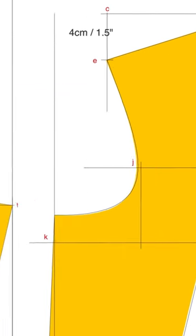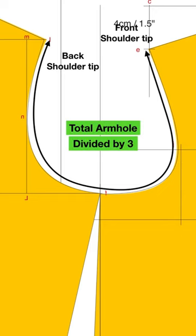The third method is finding it from total armhole. Whatever your total armhole is, divide it by 3, and you will get your cap height.